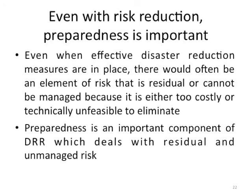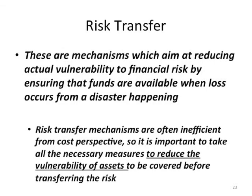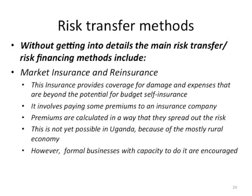Risk transfer mechanisms aim at reducing actual financial vulnerability in order to ensure that funds are available when loss occurs from a disaster. These mechanisms are often inefficient from a cost perspective, so it is important to reduce the vulnerability of assets before transferring the risk. The main risk financing methods include market insurance and reinsurance, which provide coverage for damage and expenses beyond the potential for budget self-insurance, involving paying premiums calculated to spread out the risk. This is not yet possible in many developing countries.